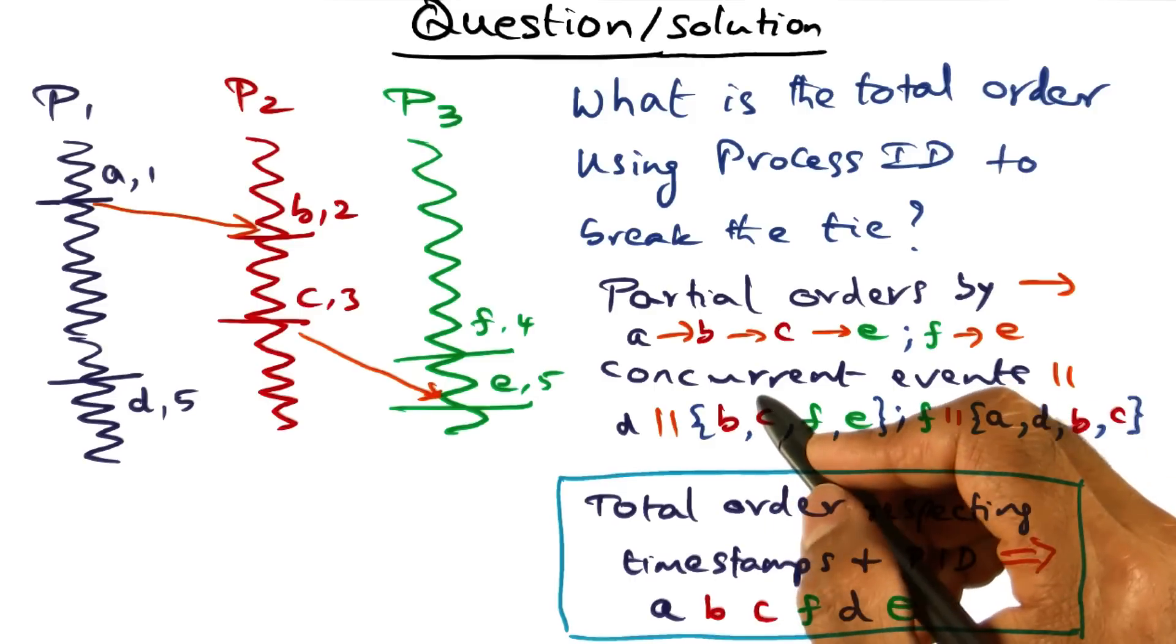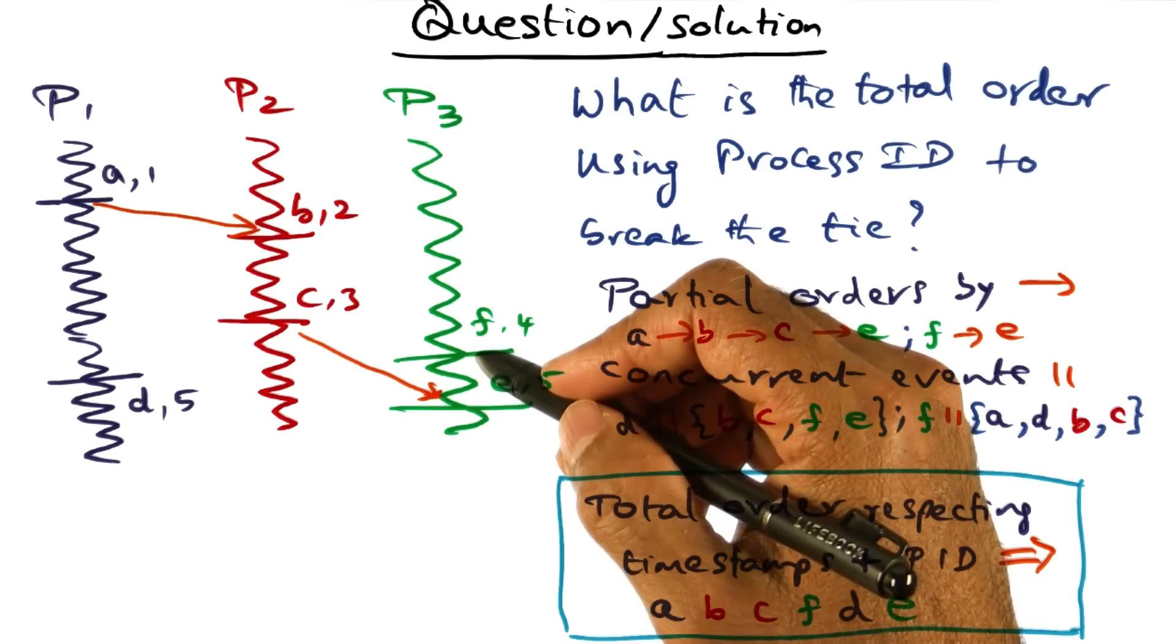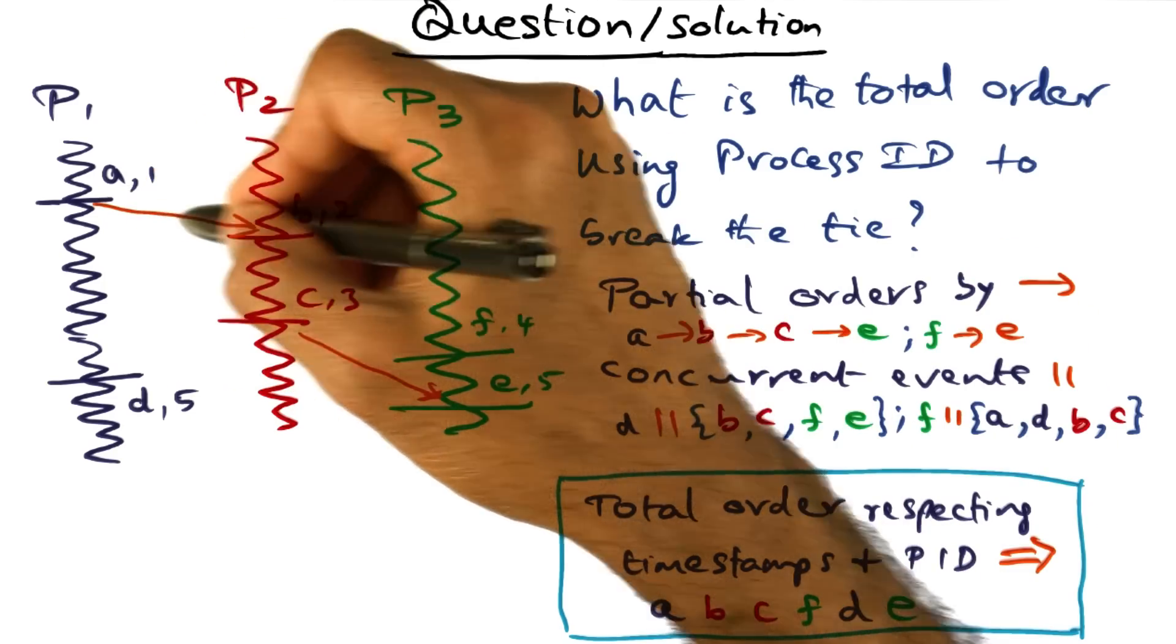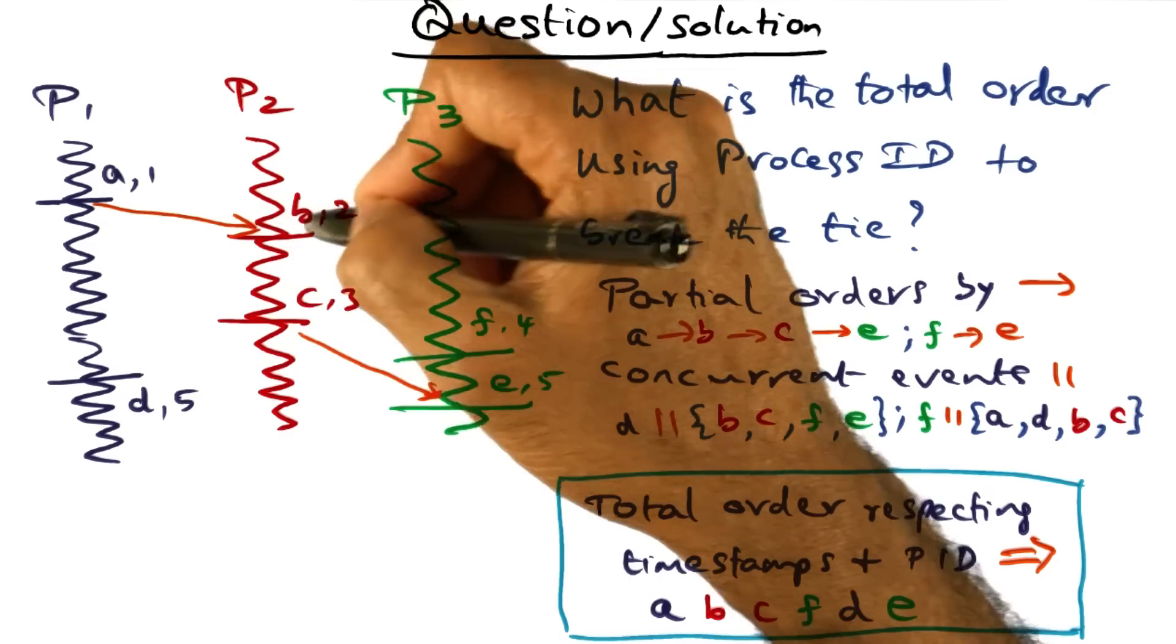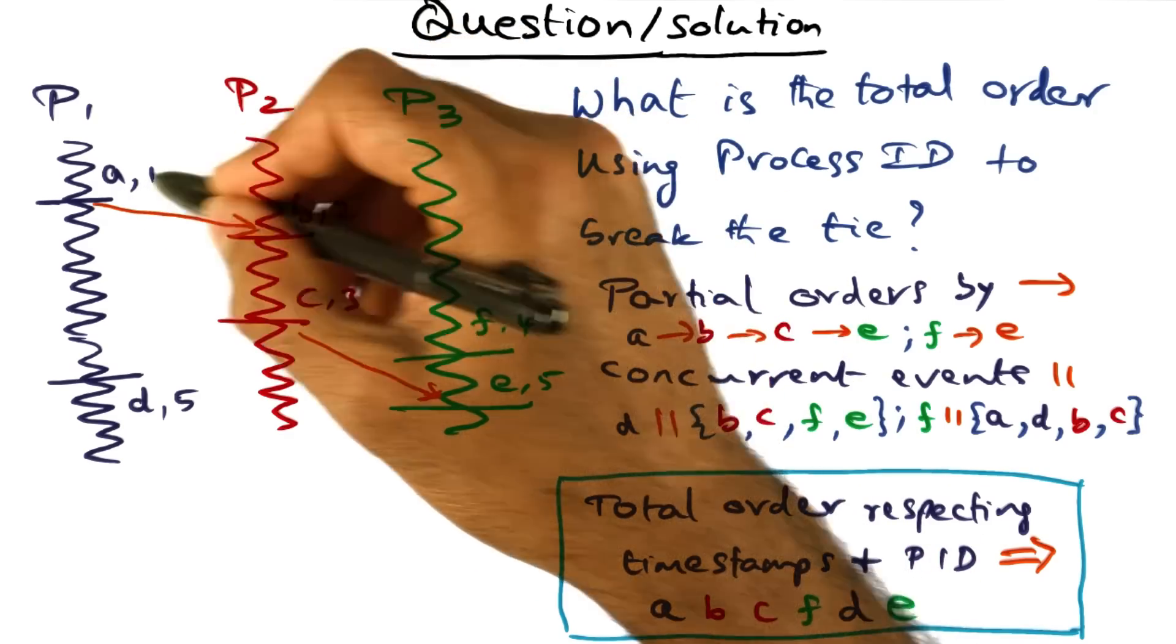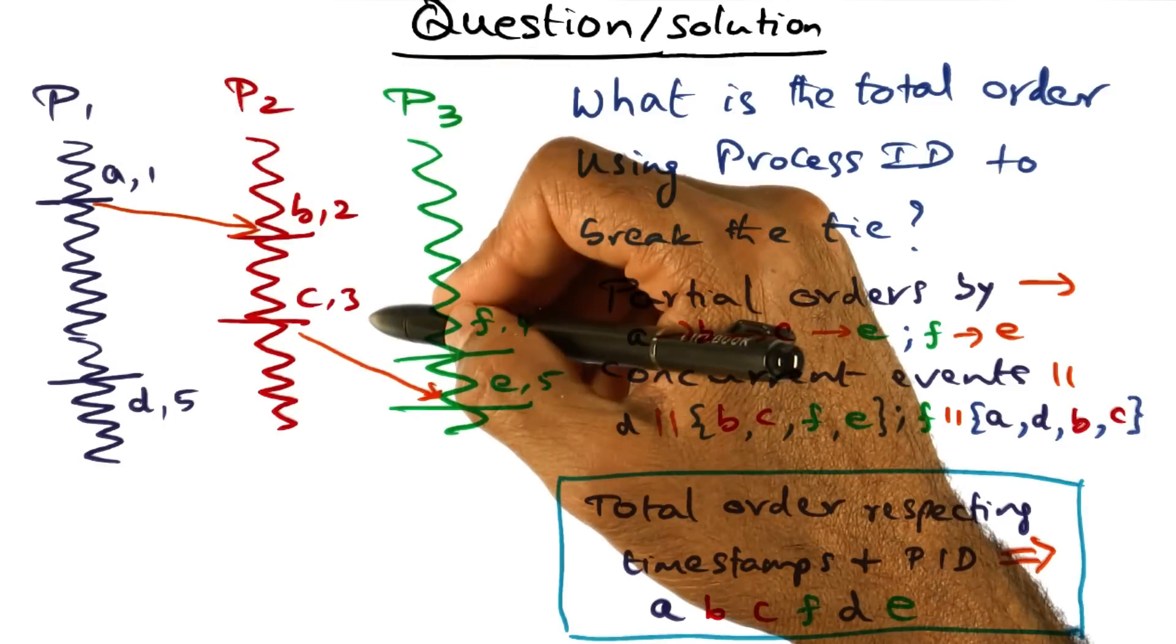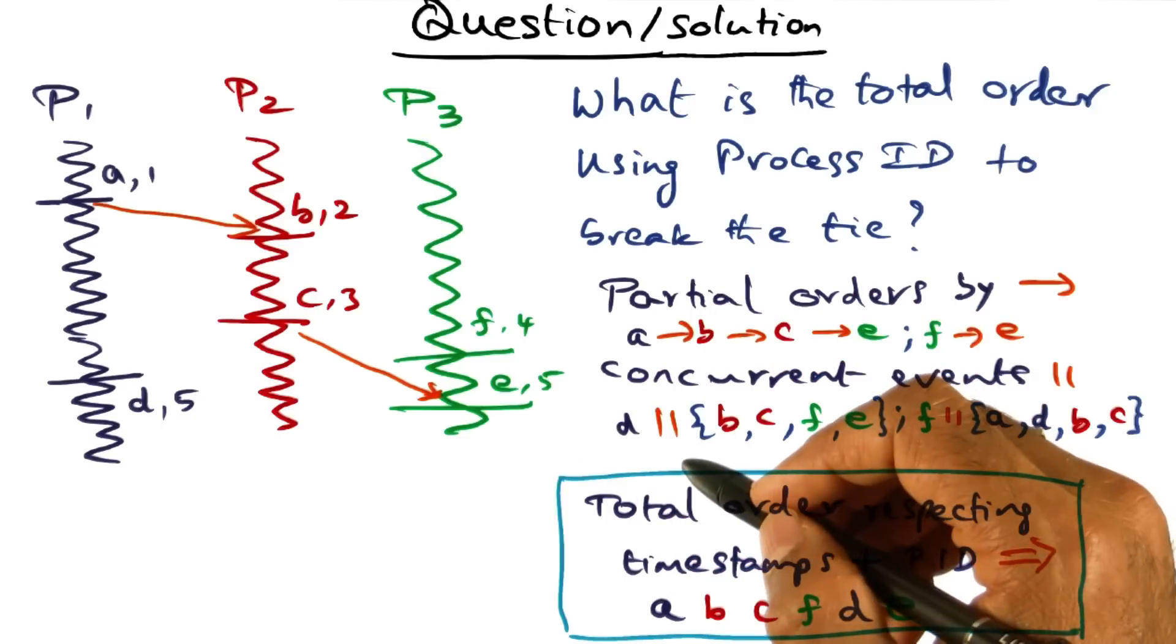So now what we have to do is, given that these concurrent events, we have to somehow fit them into a total order. As I said before, no problem in fitting these guys in the total order because they already have timestamps that distinguish them from one another. The timestamp associated with A is one, B is two, C is three, E is five. No problem with that.